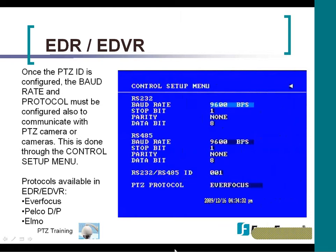Once you go into the menu of the DVR and go down to the control setup menu, you're able to set your PTZ protocol, which is down at the bottom, and then your baud rate, which is under RS-485. The EDVRs offer different protocols, and those protocols are listed below.